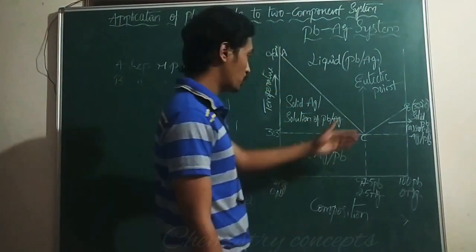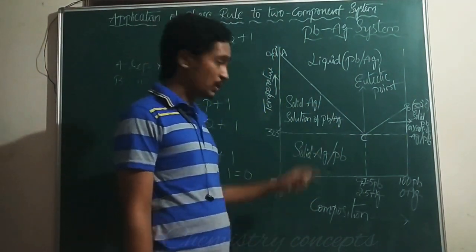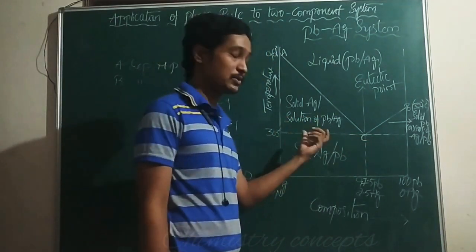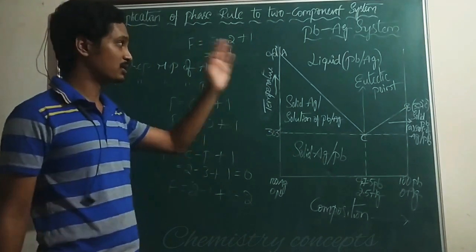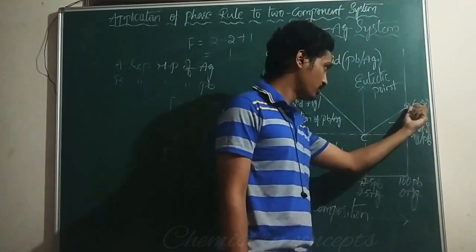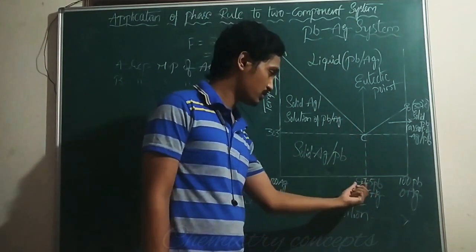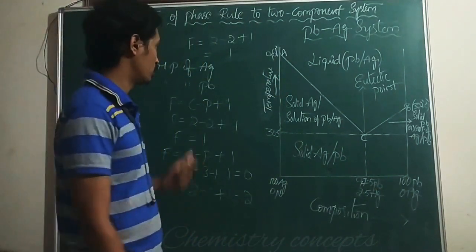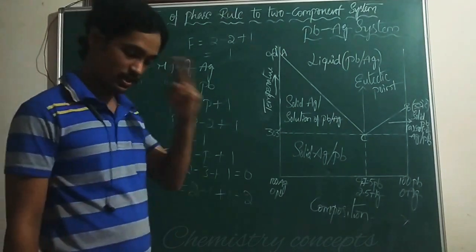If you apply a temperature higher than the eutectic point, the solid phase disappears. If you cool below 303°C, the liquid solution phase does not exist. In summary: 962°C is the melting point of silver, 327°C is the melting point of lead, and the eutectic point corresponds to a composition of 97.5% Pb and 2.5% Ag. Hope you liked this video — please comment, like, share, and subscribe.